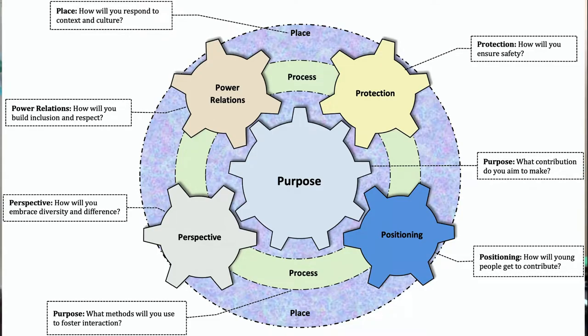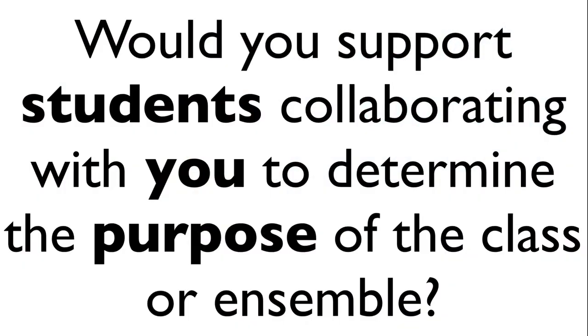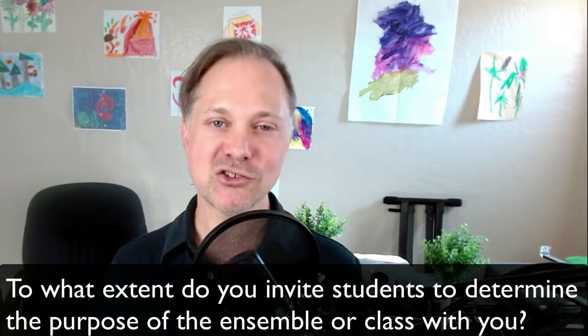This model consists of the interaction of purpose, positioning, perspectives, power relations, protection, place, and process. Each of these P's plays an important role in developing our program so that it can be more learner-centered. When you look at the P7 model, the importance of purpose is visible — it's large, it's in the middle of the model, and it highlights how the purpose of a program interacts with all other parts. Think for a moment about a class or ensemble that you teach: what is the purpose of that class or ensemble?